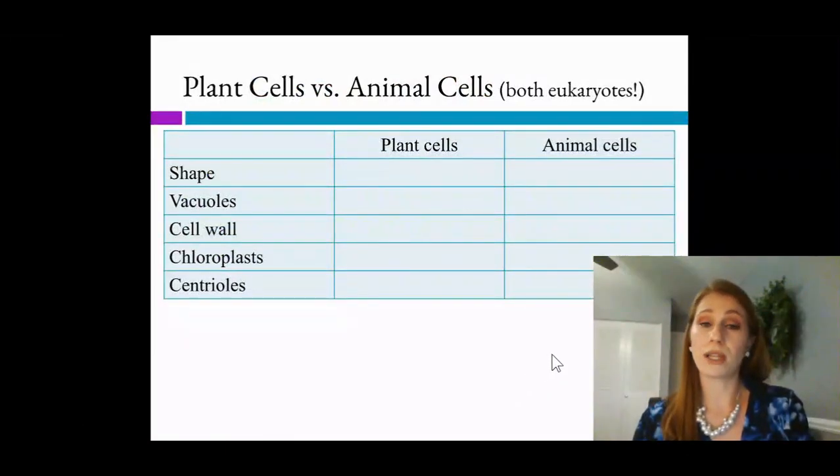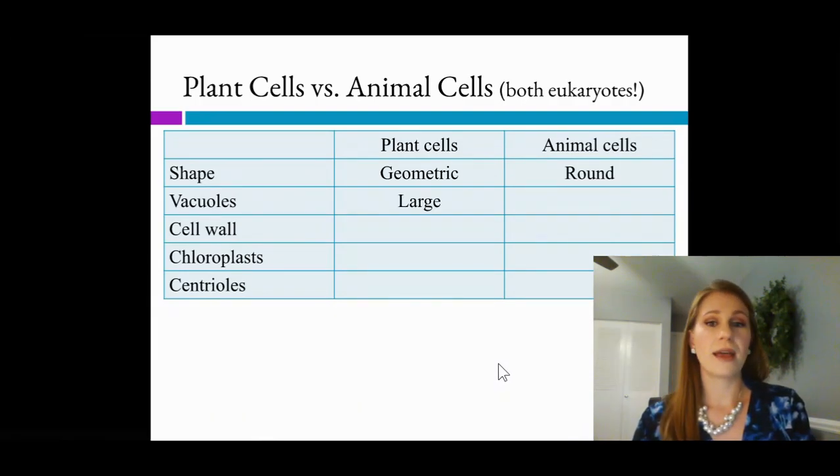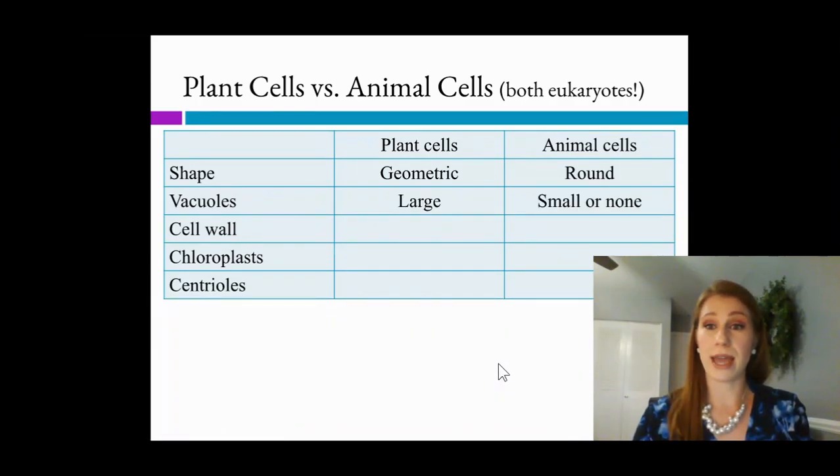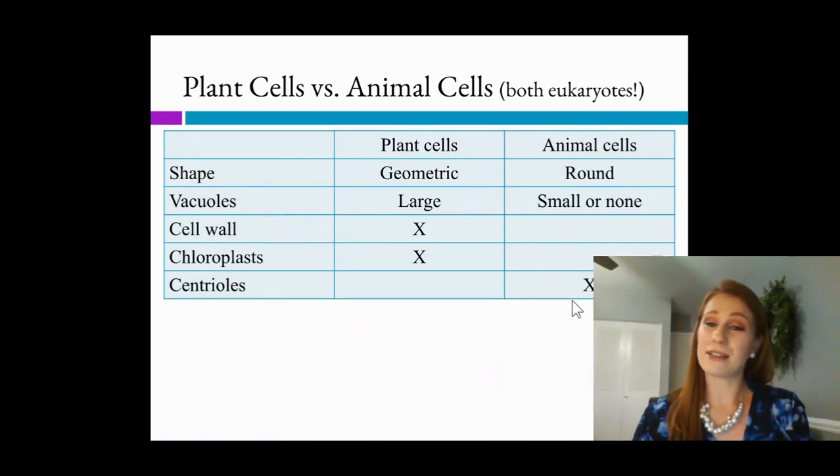And if we compare these, we can go through this pretty quickly again. We have our plant cells and our animal cells, and a couple of characteristics to the side. Plant cells are geometric, while animal cells are more round shaped. Plant cells have large vacuoles. Animal cells have small or no vacuoles. Plant cells have a cell wall. Animal cells do not. Plant cells have chloroplasts. Animal cells do not. But animal cells have something called centrioles. These are organelles that are going to be helping during cell division.